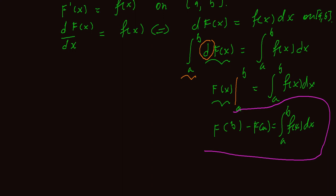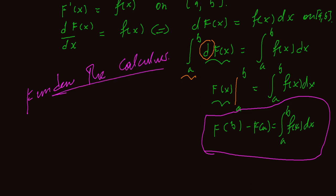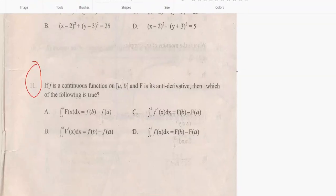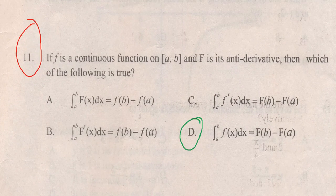And this is called the Fundamental Theorem of Calculus. The antiderivative capital F of x — so capital F of x is the antiderivative — and the integral from A to B of f of x dx, evaluated from A to B, gives capital F of B minus capital F of A. Therefore, our answer will be choice D.